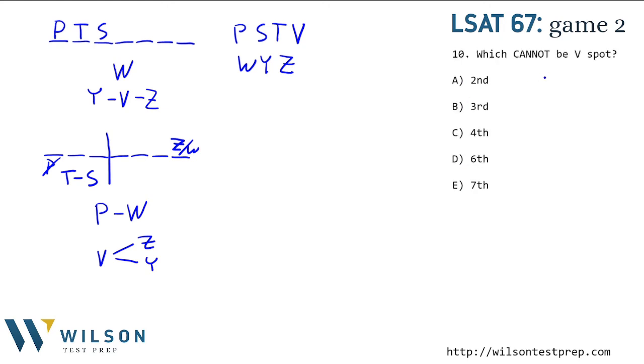Number 10 says, which one of the following cannot be the guest lecture that V gives? So it's good to check out the extremes first. So can V be second? Yeah, we can have T, V, S, and then stuff. Okay. Second works out. So let's look at seventh. Oh, seventh can't work. We've already figured out the last one has to be Z or W. So it can't be seventh here and here. V is before Z. So V is always before something. It can't be in the seventh spot. So this is correct.